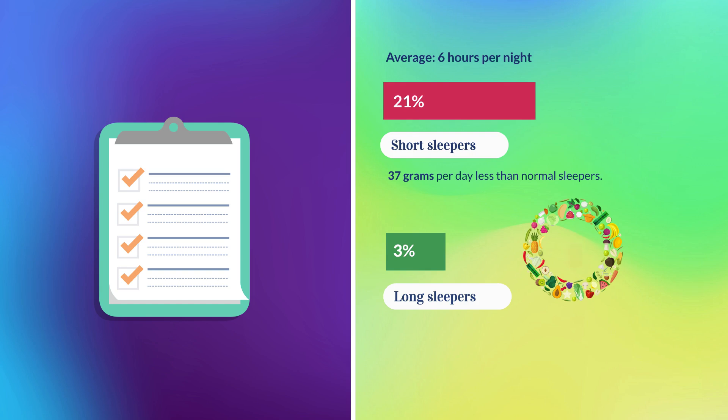Long sleepers consumed even less, 73 grams of fruits and vegetables less per day than normal sleepers.